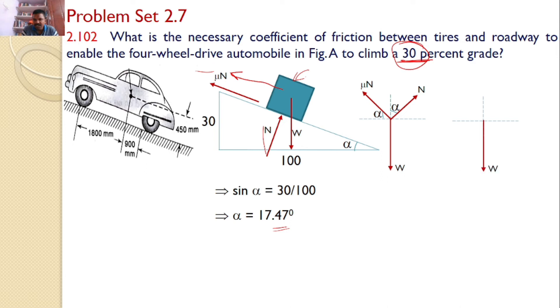Now resolve all the forces. Now W. And this N I can resolve. The horizontal component is N sine alpha and the vertical component is N cos alpha. And resolve this mu N. The horizontal component is mu N cos alpha. Vertical component is mu N sine alpha.